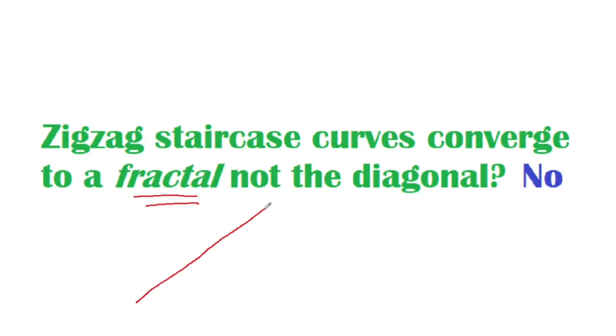But if you notice what's happening to the steps, as we keep adding more and more steps, the heights of these steps uniformly approach the diagonal, and at the end they will become flat, identical with the diagonal, so there is no fractal curve left.